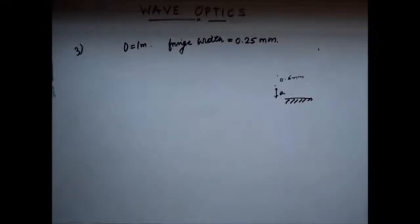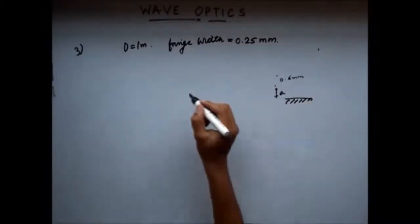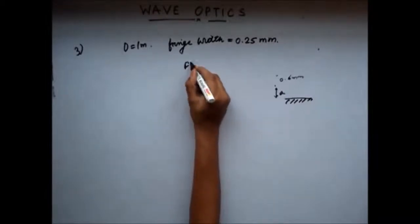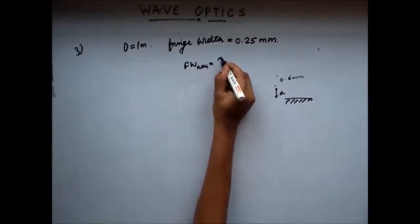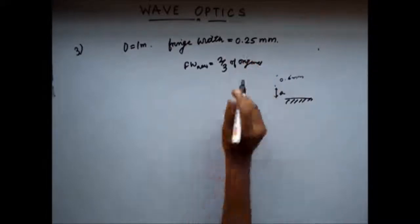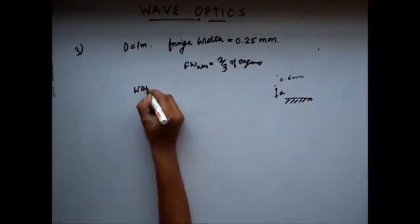The fringe width became two-thirds of the original fringe width. So it says that when the source was moved away from the mirror by 0.6, the fringe width became two-third of the original fringe width. So fringe width now, mu, is two-third of original. So the question is that given these information, what is the wavelength of the light which we used in this experiment?